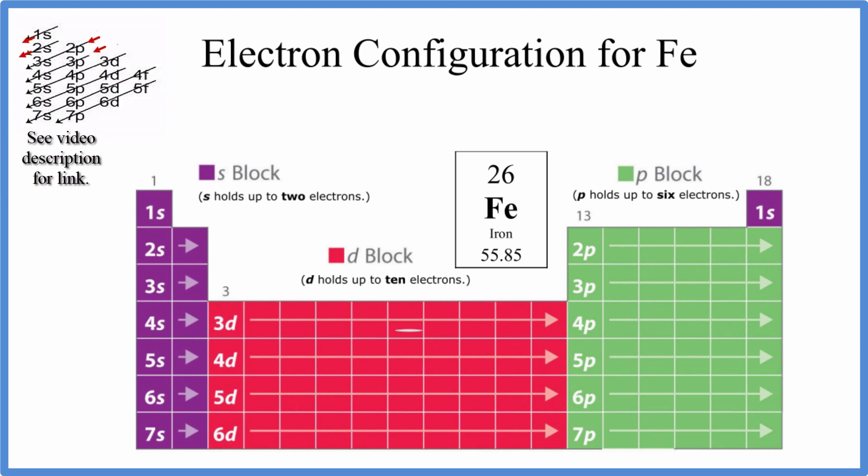You can use this chart here to write the electron configuration for iron. You can find a link in the description to help you do that. I do prefer this method, though, where we have the periodic table broken up into these orbital blocks. Just a little bit easier to use.